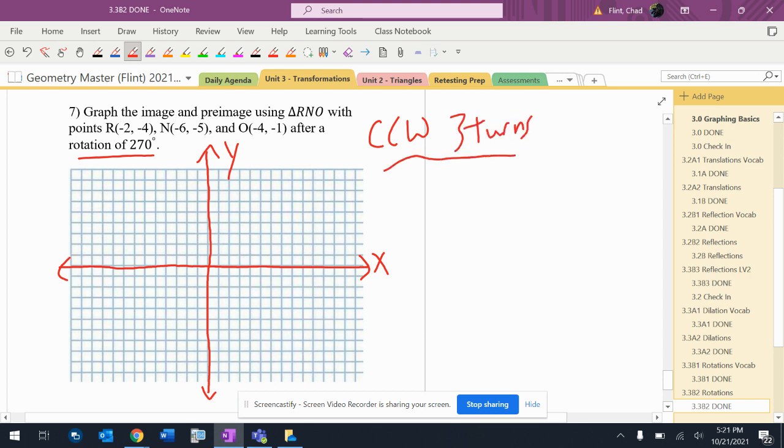So negative one, two, one, two, three, four. And then one, two, three, four, five, six, one, two, three, four, five. And then negative one, two, three, four. Negative one.